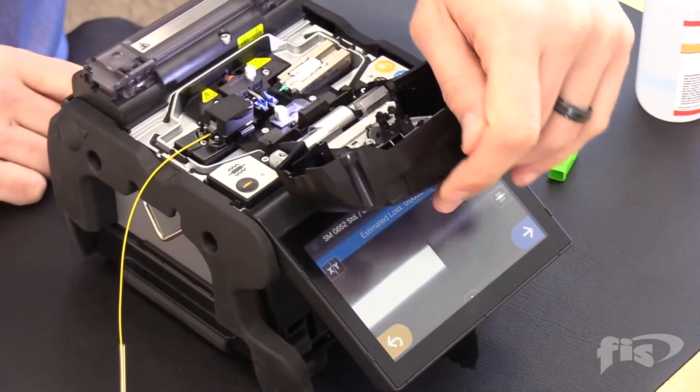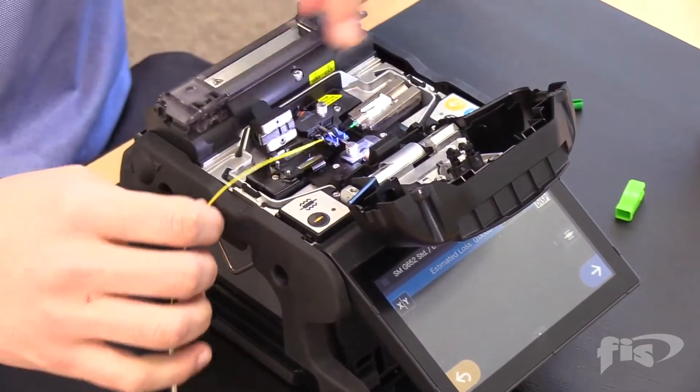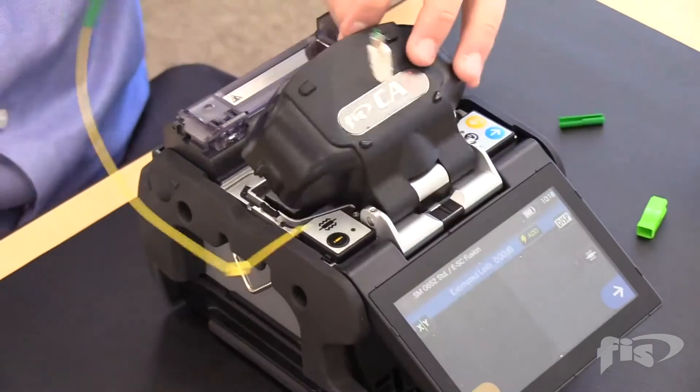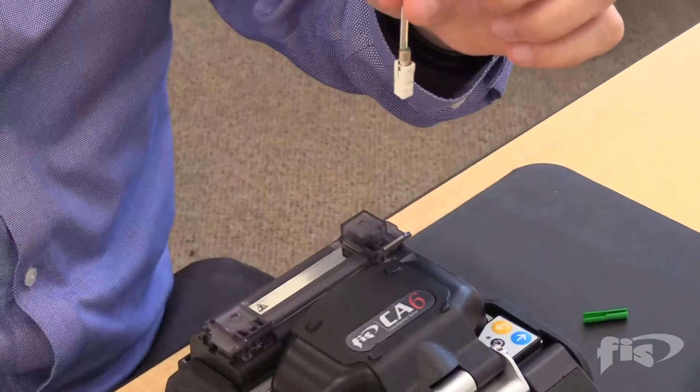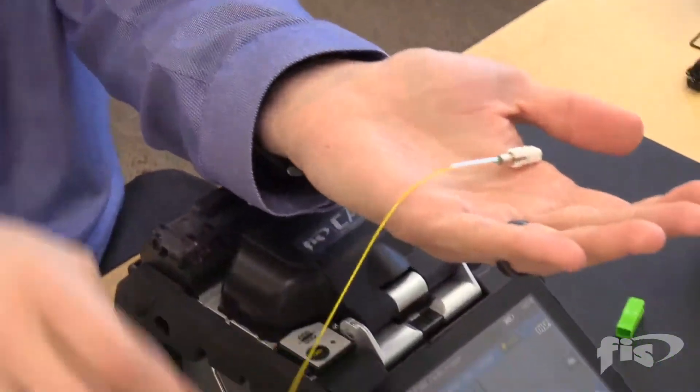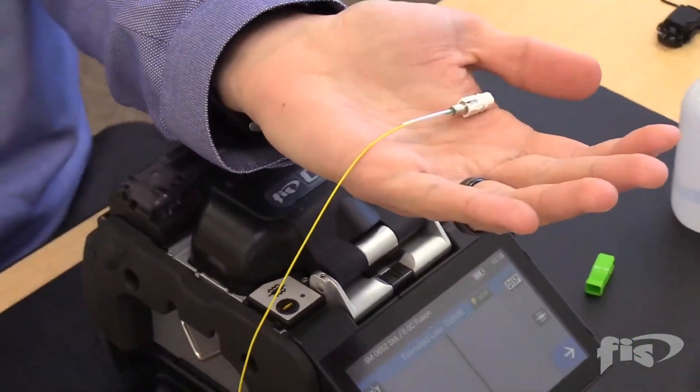When splice is complete, open the lid, open the cover of the fiber holder, and gently pull the fiber right out of the splicer. Next, slide down the splice sleeve so it grabs both sides of the 900-micron type buffer, and place it into the oven.